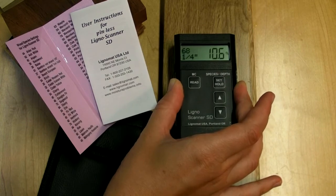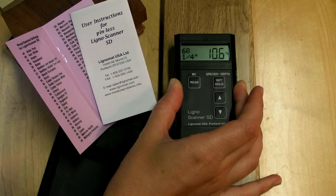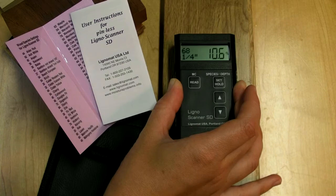We will now show you how the unique dual depth feature not only allows measuring thicker and thinner boards, but you can actually take surface and core readings on the same board.